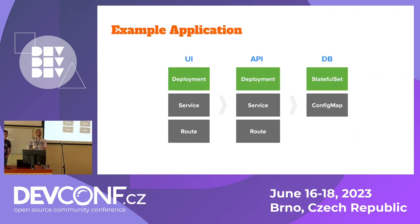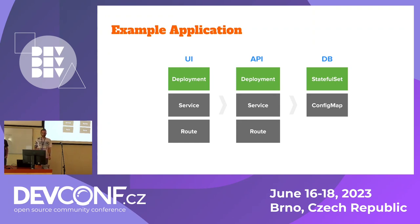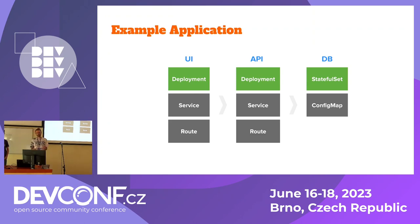Let's start with an example application that will help us through the whole talk. We have the three standard layers: UI, API, and DB. Here we have an example of the resources we may deploy on a Kubernetes cluster — but this is just an example, there should be more. Let's focus on the three green ones: two deployments for UI and API, and one for the DB. It will be helpful later.